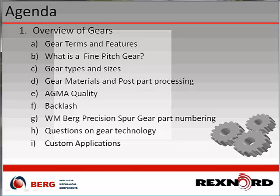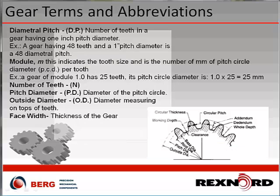Let's start by discussing some basic gear terms. A diametral pitch — referred to simply as pitch — is the number of teeth in a gear having a one-inch pitch diameter. For example, a gear with 48 teeth and a one-inch pitch diameter is a 48 diametral pitch. A 24-pitch gear with 24 teeth is a one-inch diameter gear. This gives you an idea of tooth size based on the diametral pitch.